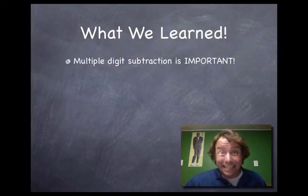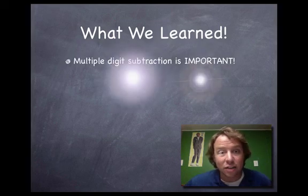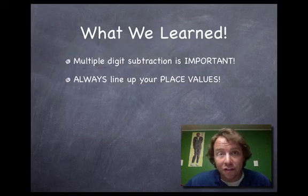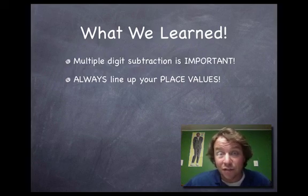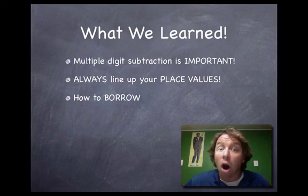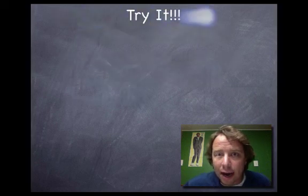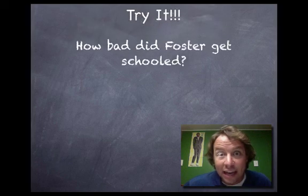What did we learn? First, multiple digit subtraction is important — especially when dealing with money, paying people, or giving people things. You have to line up your place values, just like with addition: ones places lined up, then tens places. If you do it wrong, your answers will be all messed up. And finally, we learned how to borrow — a very important skill you'll need to practice, practice, practice.